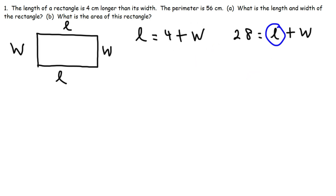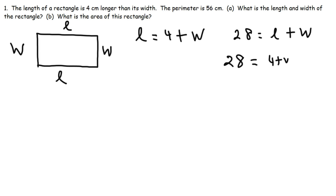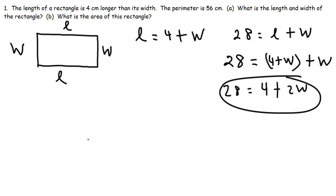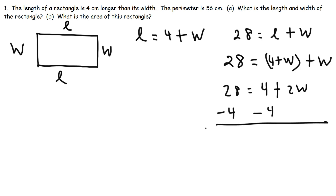So we're going to write 28 equals, and instead of L we write 4 plus W, then plus the other W. W plus W gives us 2W, so we have 28 equals 4 plus 2W. At this point we have one equation and one variable, so we can solve for W. Subtracting both sides by 4: 28 minus 4 is 24, giving us 24 equals 2W.